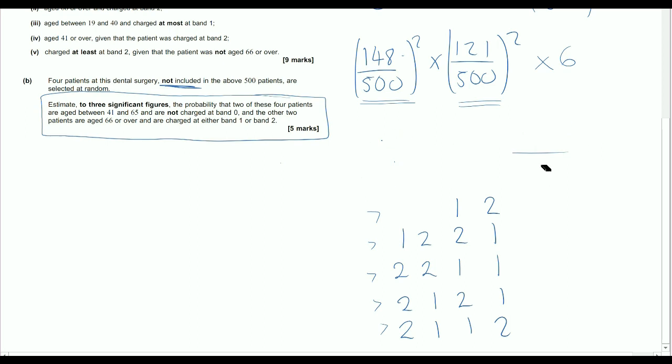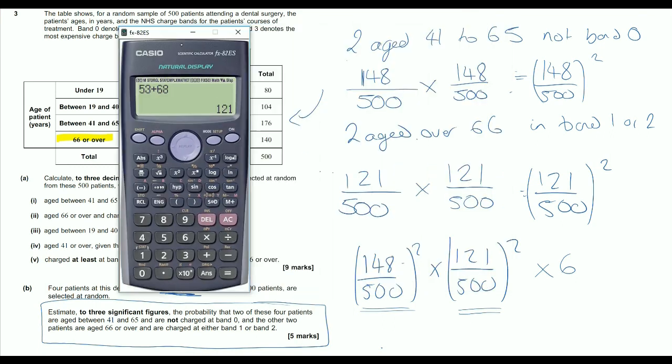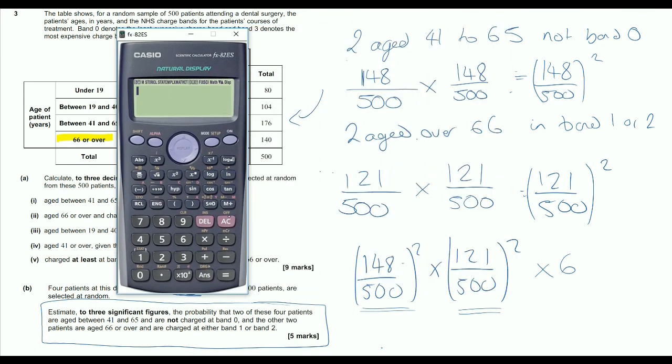So we have to take this. This is the probability that one possible arrangement comes up and multiply that by six, not by 24. Because we're not trying to arrange them in as many ways as possible. We are trying to work out, of the people, how many different ways we can have two of them in category one and two of them in category two. So just for completeness, I'll just show that this does come to the correct answer. So on our calculator, then, we are going to be doing the fraction, 148 over 500. And there's two of those, so we're going to square that fraction. We're multiplying that because it's and.